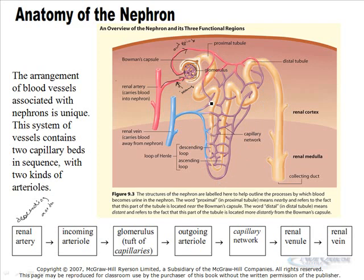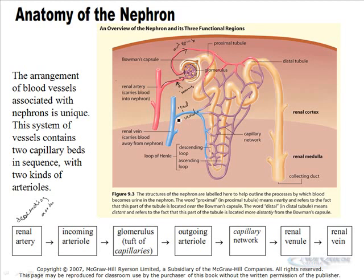Oxygen leaves the blood, leaves the capillaries, and goes to all the cells around the nephron and in the kidney. Deoxygenated blood is then carried away. So we have our outgoing arteriole to our capillary network, to the renal venule — a small vein — and then to the renal vein. Blood goes back out and up to the heart, out to the lungs to get oxygen, back to the heart, and back out to the rest of the body.